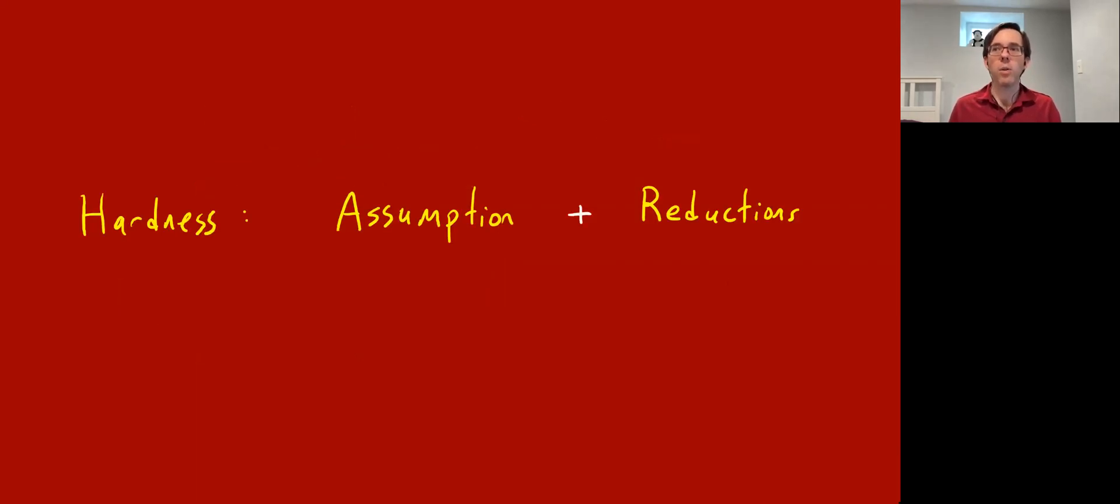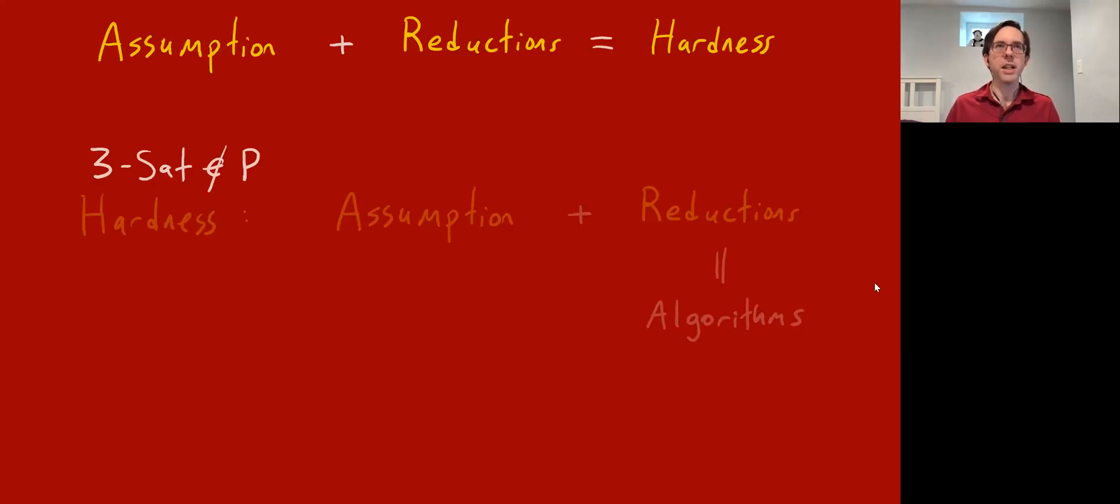When you want to prove hardness results for a certain computational problem, it's usually a combination of two things: a hardness assumption and a reduction. And reductions are just algorithms, so that's kind of nice. It reduces, in a way, the task of proving hardness - making one or a limited number of assumptions, and then designing algorithms, which is the thing that we're good at. A lot of complexity theory is actually just algorithm design.